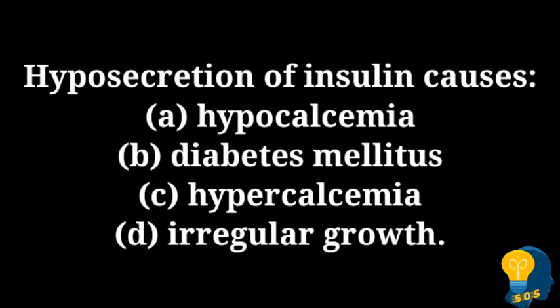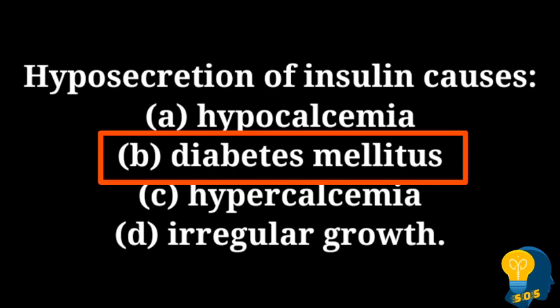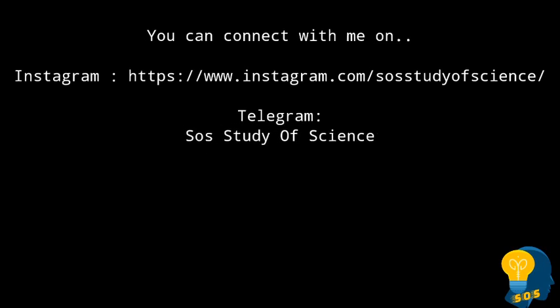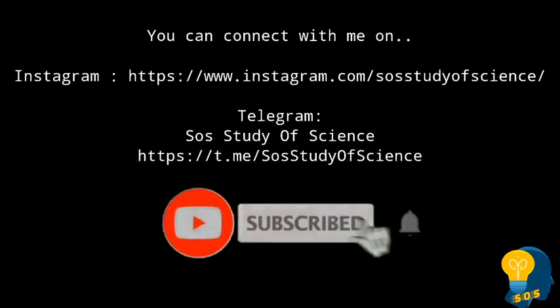The next question is: hyposecretion of insulin causes. The options are option A hypocalcemia, option B diabetes mellitus, option C hypercalcemia, option D irregular growth. The correct answer is option B, diabetes mellitus — that means diabetes. That's all for this session. In video series 8, I will post 10 more questions from the lesson Control and Coordination. If you found this video useful, don't forget to share with your friends. Thank you so much for watching!